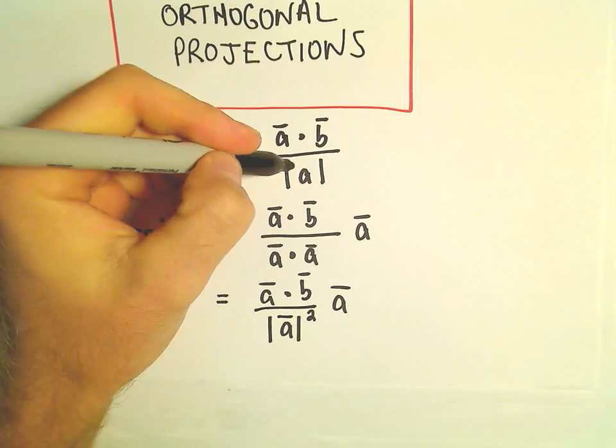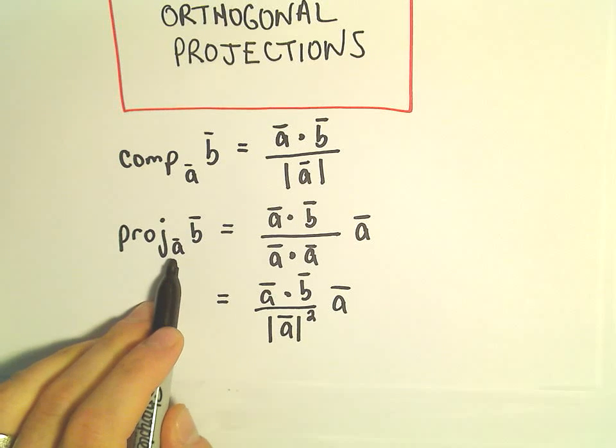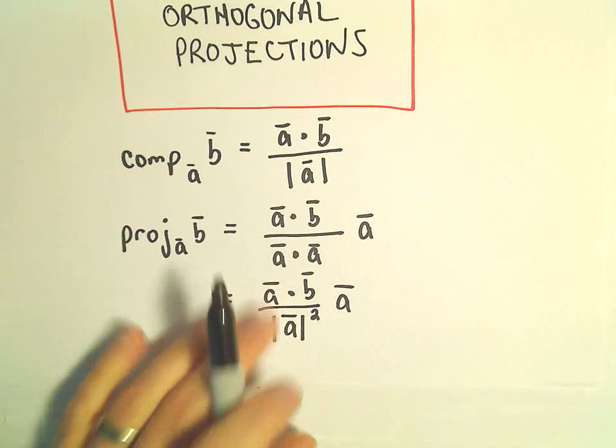And then, to figure out the projection of vector B along vector A, we take A dot B over A dot A and multiply that by vector A.